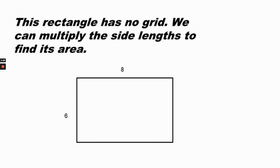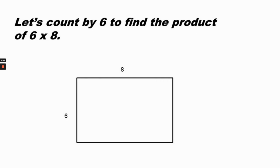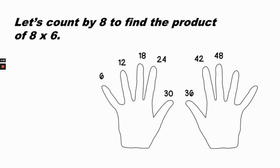This rectangle has no grid — we can multiply the side lengths to find its area. Let's count by six to find the product of six times eight: six, twelve, eighteen, twenty-four, thirty, thirty-six, forty-two, forty-eight. Eight times six is forty-eight.